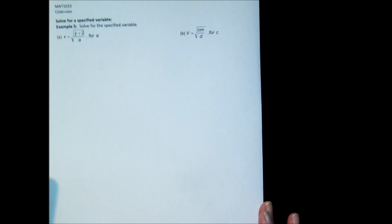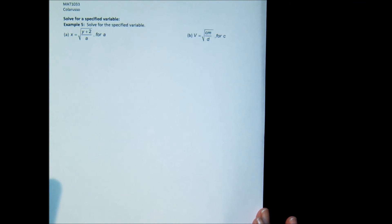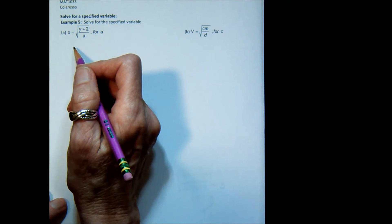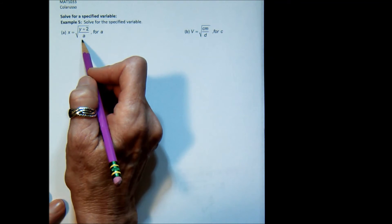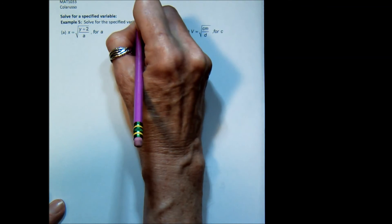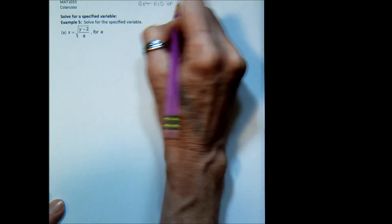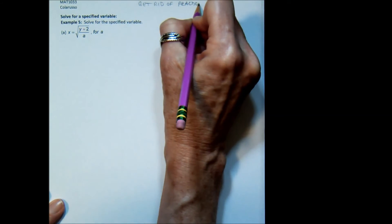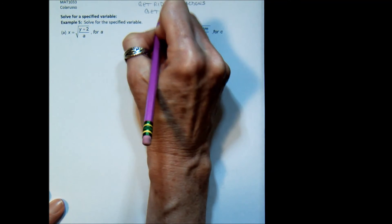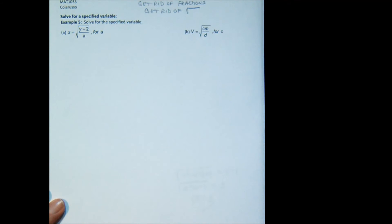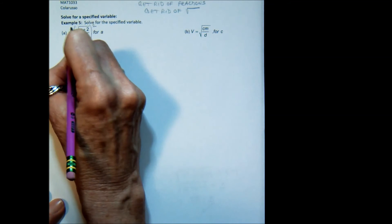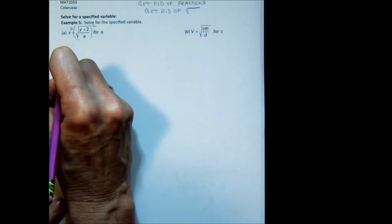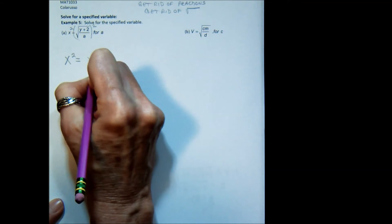Let's use that same idea and solve some specified variable type equations. So here I have the equation x equals square root of y plus 2 over a. And I want to solve for a. So two things to keep in mind when you are solving these literal equations. One, you want to get rid of fractions by multiplying by LCDs. And two, you have to get rid of radical signs. So let's first get rid of this radical sign. And the way to do that is to square both sides. That will undo the radical sign. That gives me x squared equals y plus 2 over a. So I got rid of the radical sign.